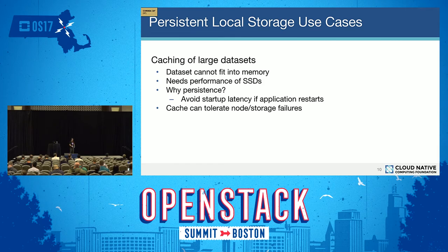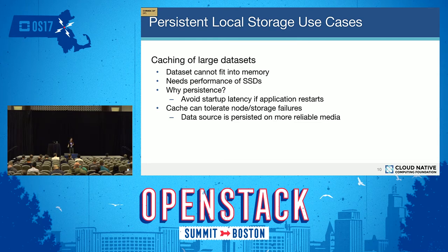If the actual node or storage fails, it's okay because it's just a cache — the real data source is persisted on more reliable media, so you can always go back to the backup. A common pattern for caches is to create multiple replicas across multiple nodes so you can tolerate a single node going down.